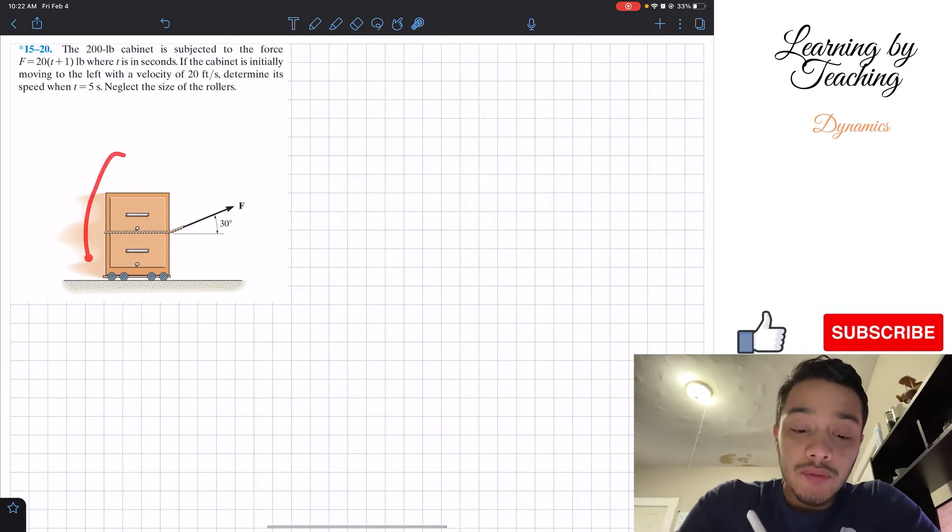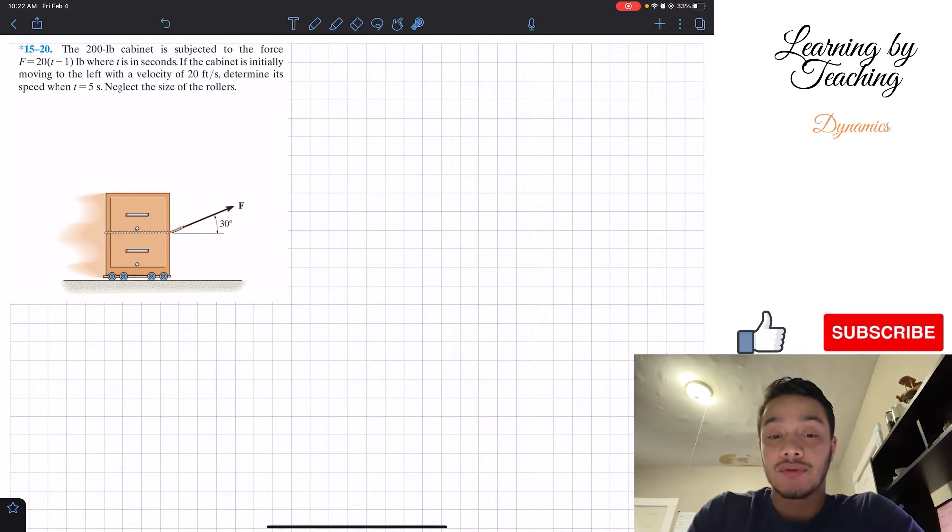So what we're given here is that we've got a cabinet. It's attached by this rope and by this rope we're applying a force that is at a 30 degree angle with respect to my horizontal.